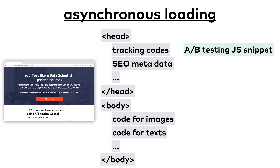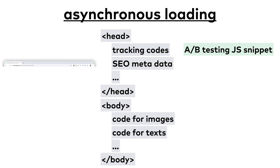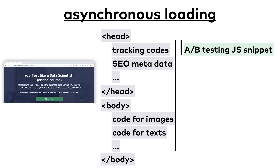They will just continue to render in parallel with your script. That's perfect, because your website page load time won't be affected — it will be just as fast as before — yet your A/B testing JavaScript will do its job in the background. There is one problem, though. In some rare cases, when you create a very complex experiment with many changes and your users have a very bad internet connection, it can happen that, because of this asynchronous loading, your website's content renders faster than your JavaScript.